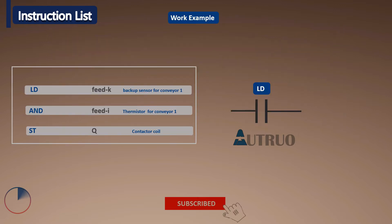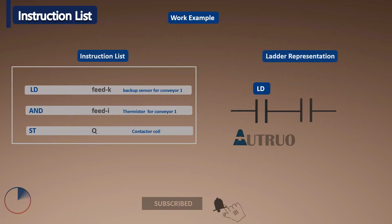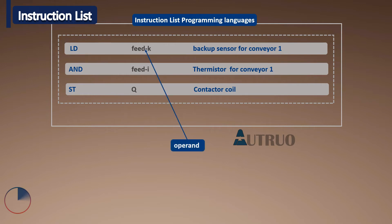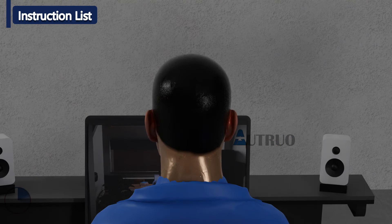LD A — that is, load K. AND — that is, load I. Equal STQ — that is, the output to Q. Now, looking at the first line: LD is the operator and K is the operand, which are the words at the ends of program lines. The instruction is to load K into the memory register, which will be called later for further operations when needed.